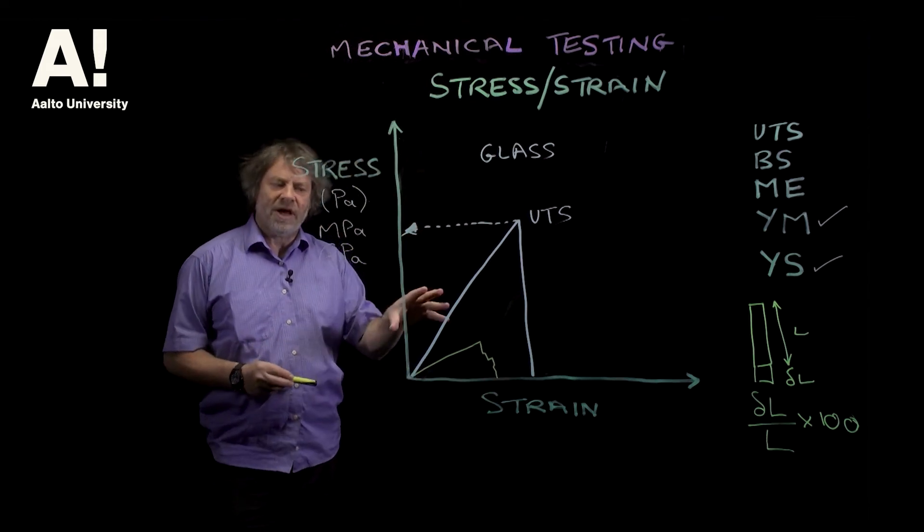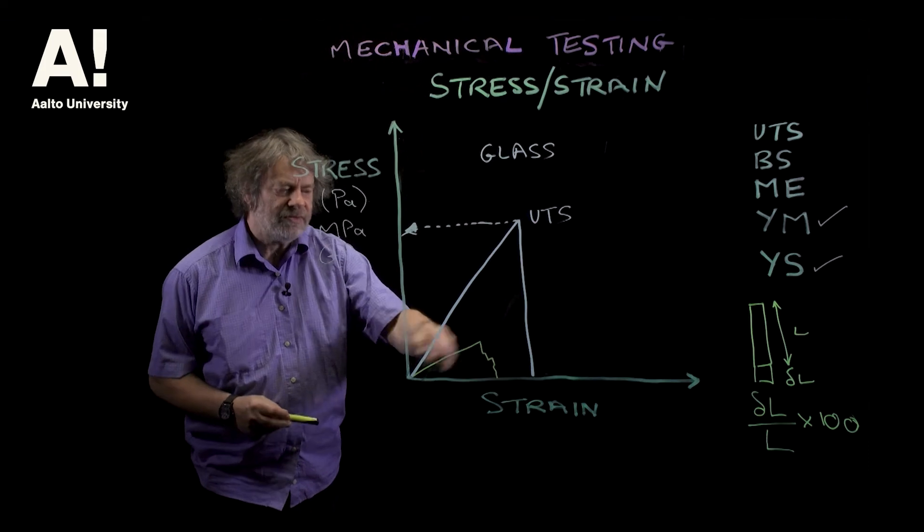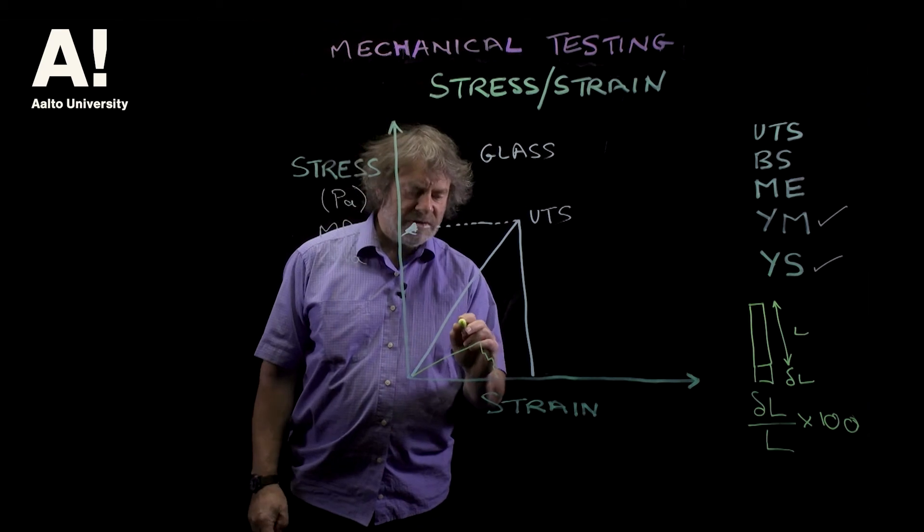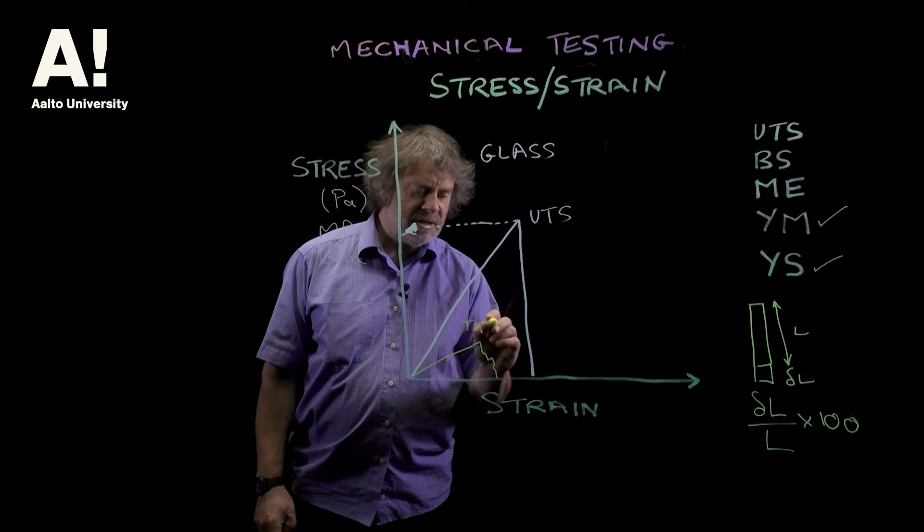And when it failed, it might fail in a slightly more complicated way, so that rather than failing in one go, it would show this sort of failure. That's still quite a brittle failure. So that might be characteristic of a thermally modified timber, for example.